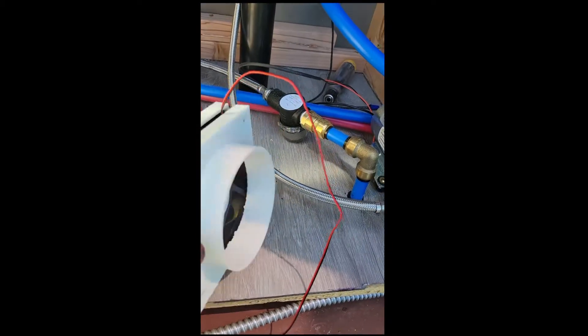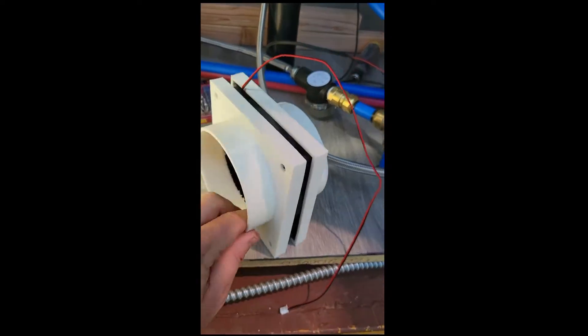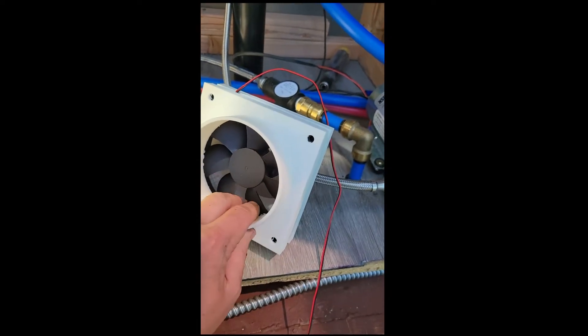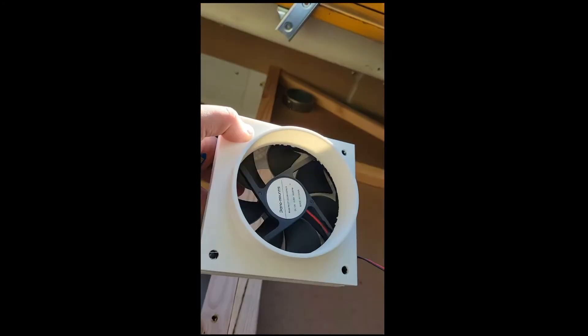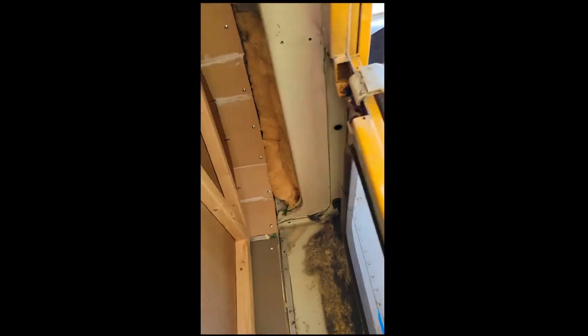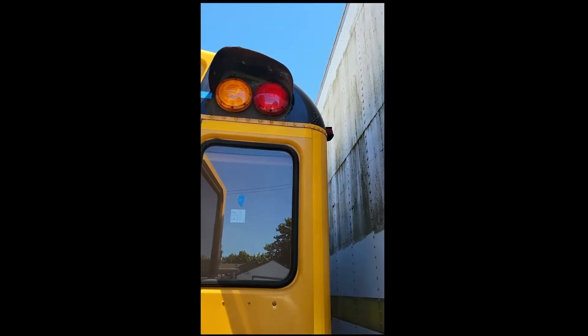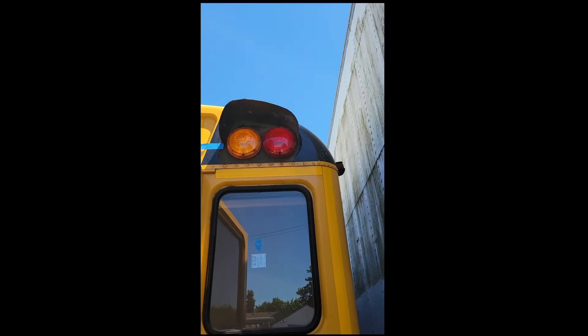And then what I did was I 3D printed this housing for a fan, and this will go up in there. And then that will have another one of those kind of vents that goes to the back of the lights, which will then go out one of those two. I haven't decided which one - really depends on which one lines up better.